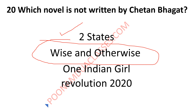People are saying that Two States was not among the options — I am not sure, I cannot comment on that. But three options were written by Chetan Bhagat: Two States, One Indian Girl, Revolution 2020, and maybe some other novel. Wise and Otherwise, we know, is the right answer and that is a book by Sudha Murthy.